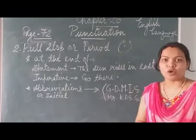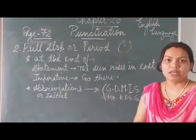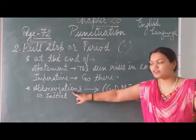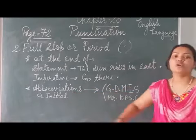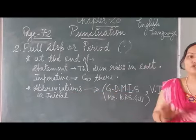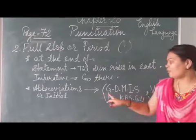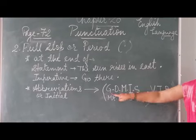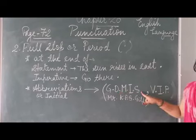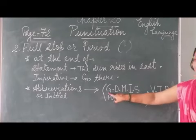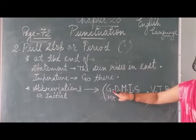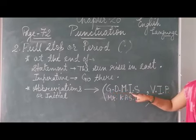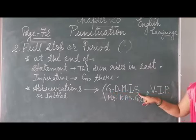Abbreviation is the short form of many words. We write in short form — those are your abbreviations. In abbreviations and in initials also, we use full stop. For example, when we write a word like G.D.M.I.F. in short, after every letter we put a full stop: G dot, D dot, M dot, I dot, F dot.